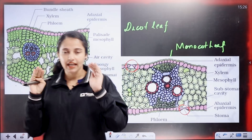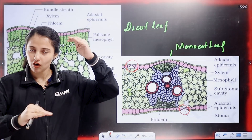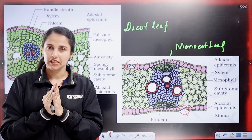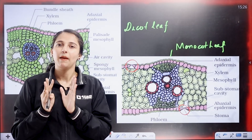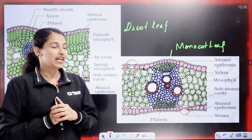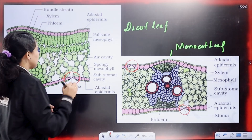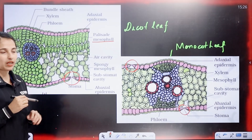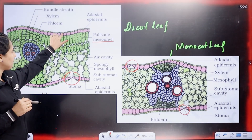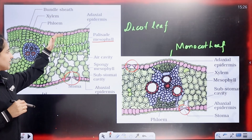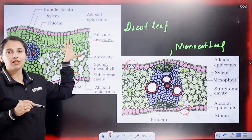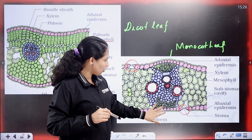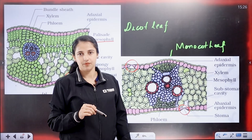Between the upper epidermis and lower epidermis, we have a parenchymatous tissue — that means mesophyll tissue. This applies to both the upper and lower epidermis layers, with mesophyll tissue in between.